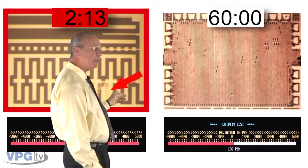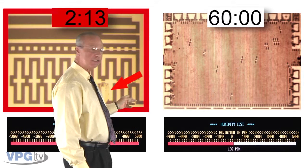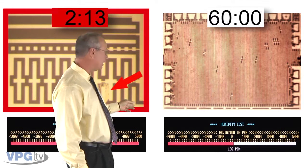It only took two minutes and thirteen seconds for the nichrome thin film element to etch through and fail.